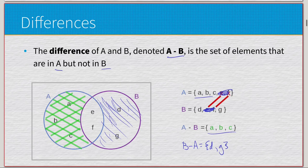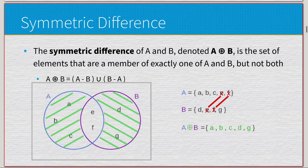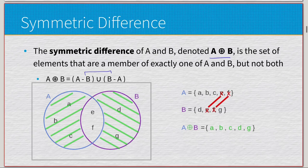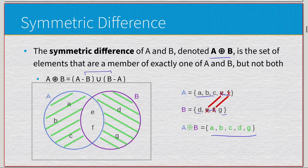Another operation where order doesn't matter much is the symmetric difference. The symmetric difference of A and B — essentially A exclusive-or B — is the set of elements that are a member of exactly one of A or B, but not both. It's the union of A minus B and B minus A, which excludes the intersection. We end up with {a, b, c, d, g}. It's called exclusive-or because it contains only the parts unique to each set with no overlap.